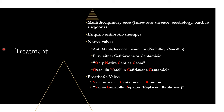Remember 'Valves Generally Repaired' for prosthetic valve treatment: Vancomycin, Gentamicin, Rifampin. For fungal endocarditis, treatment is Amphotericin B for about six to eight weeks. For native and prosthetic valve bacterial endocarditis, the antibiotic course is typically four to six weeks.